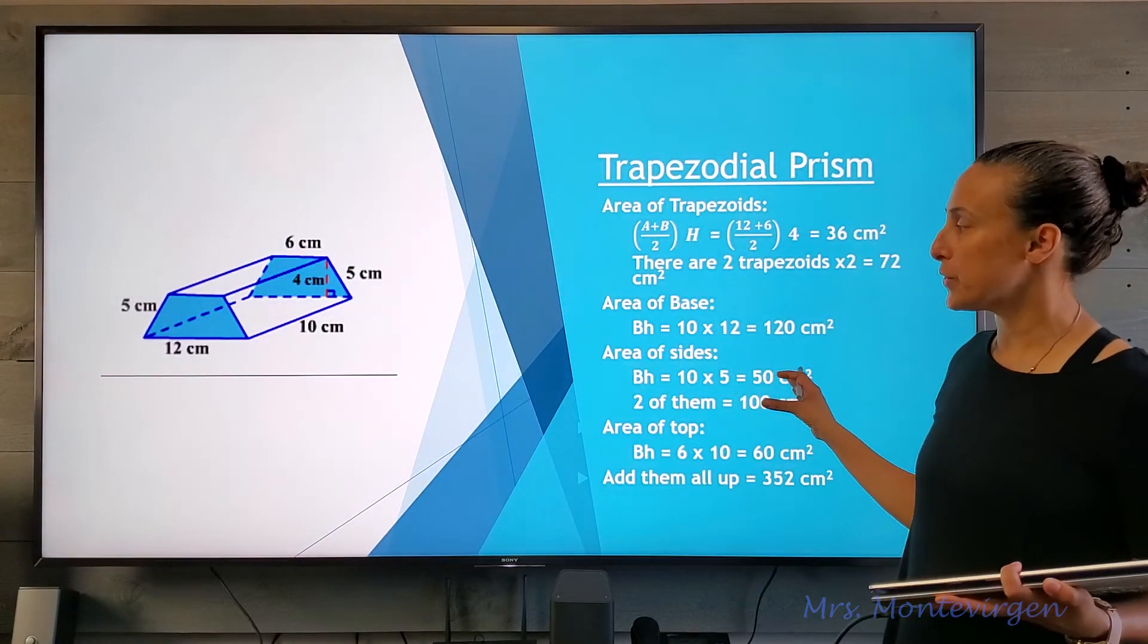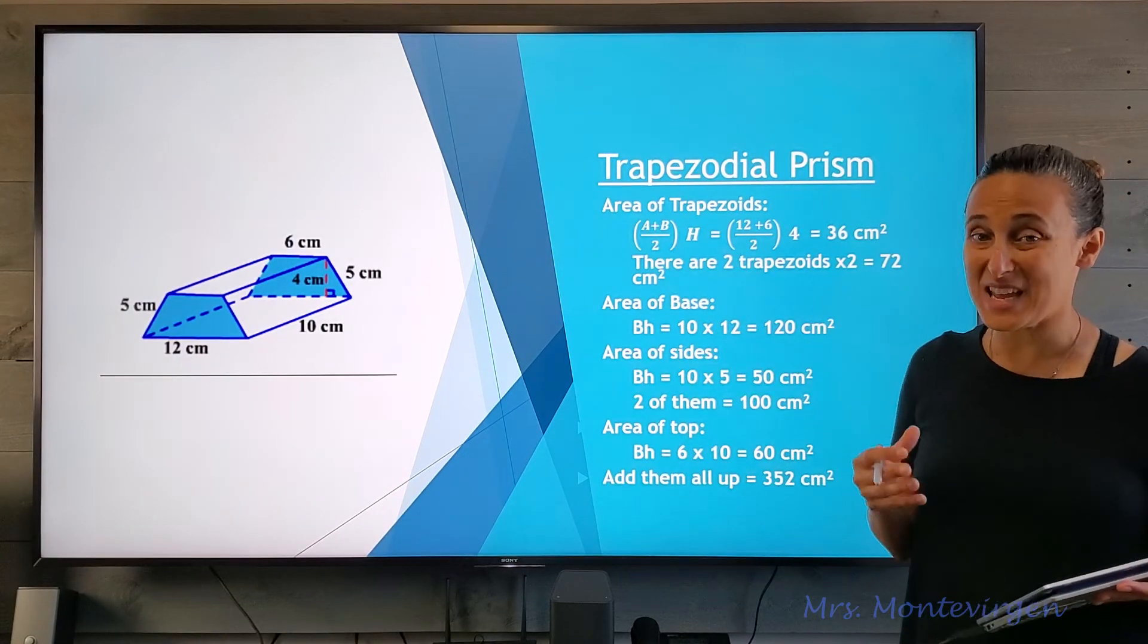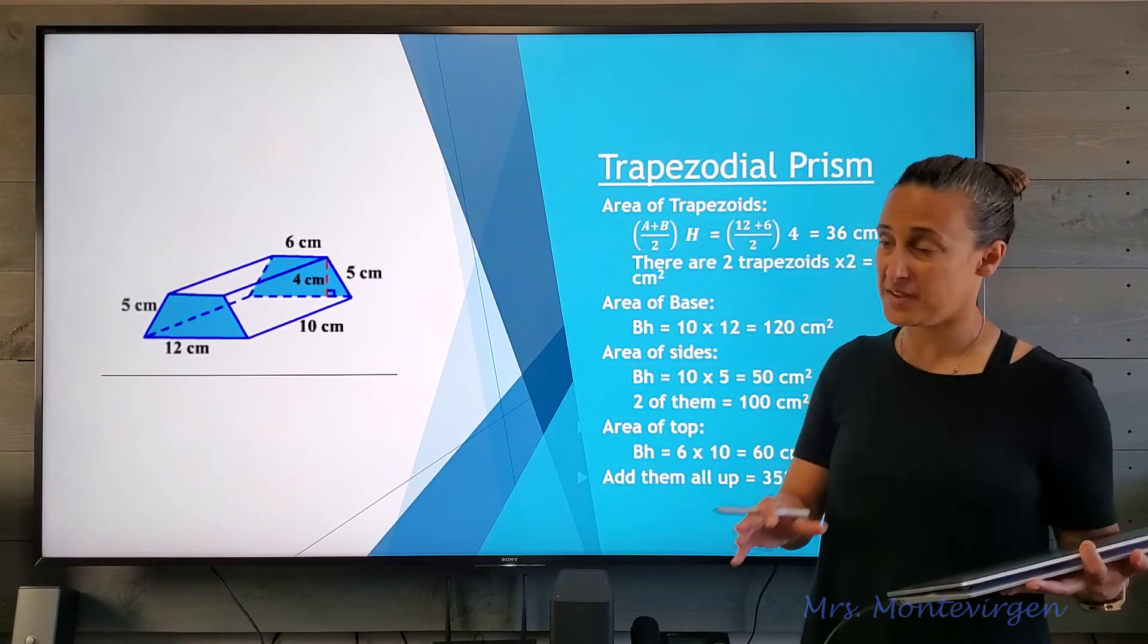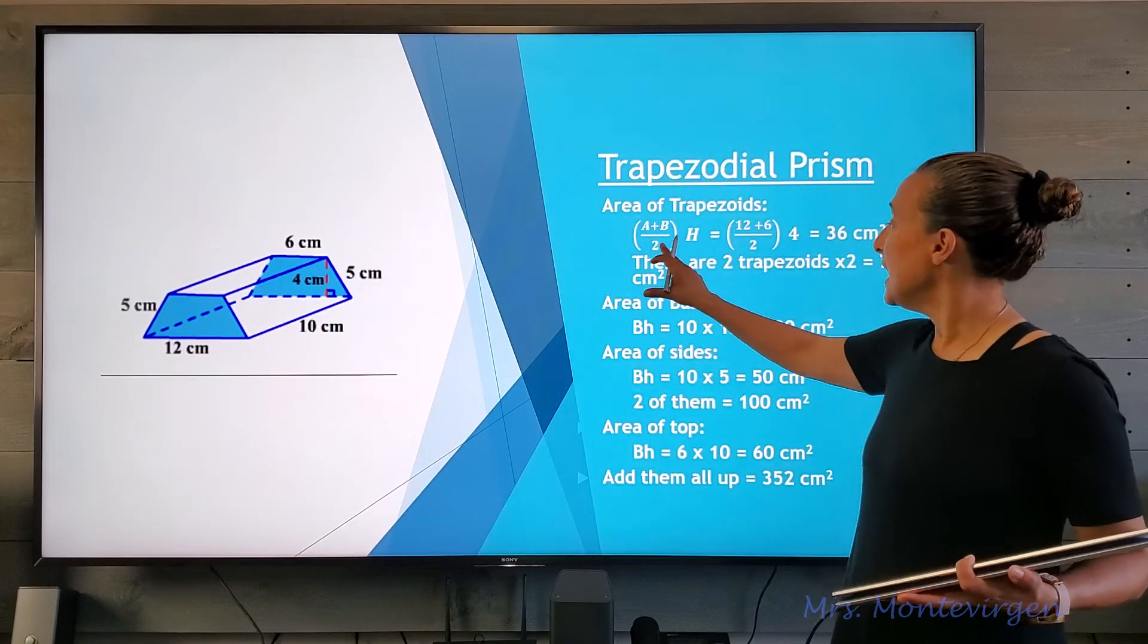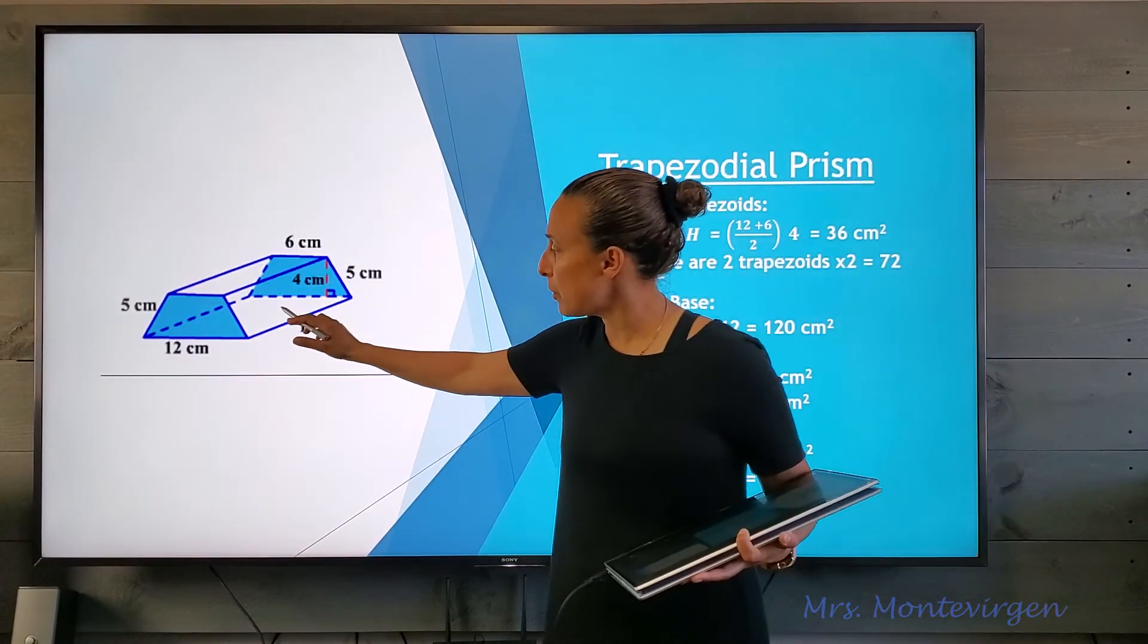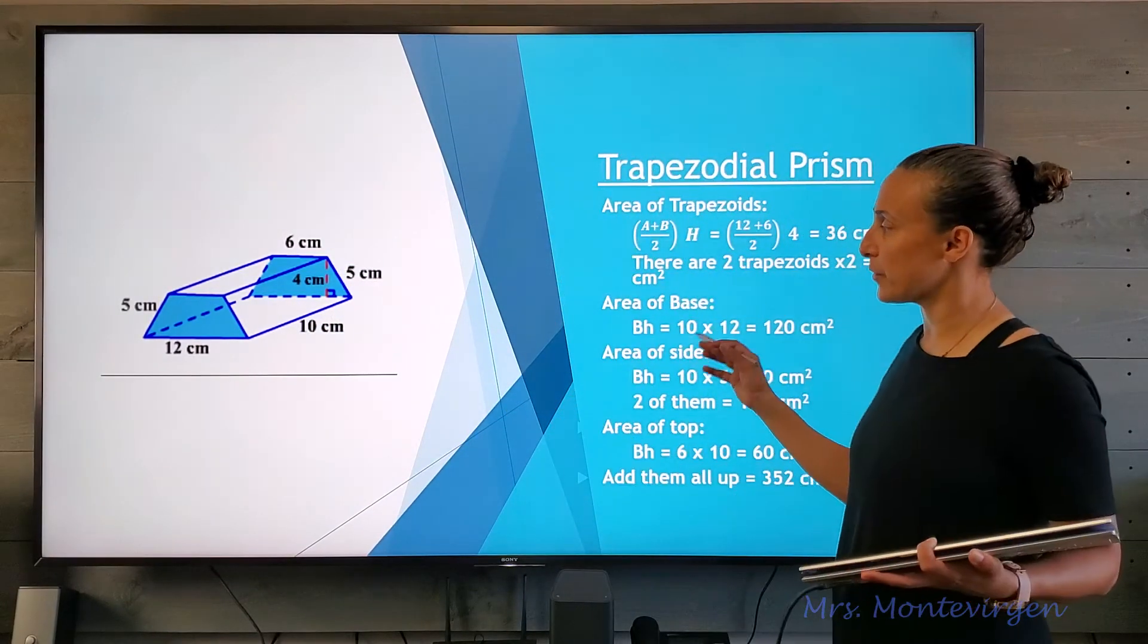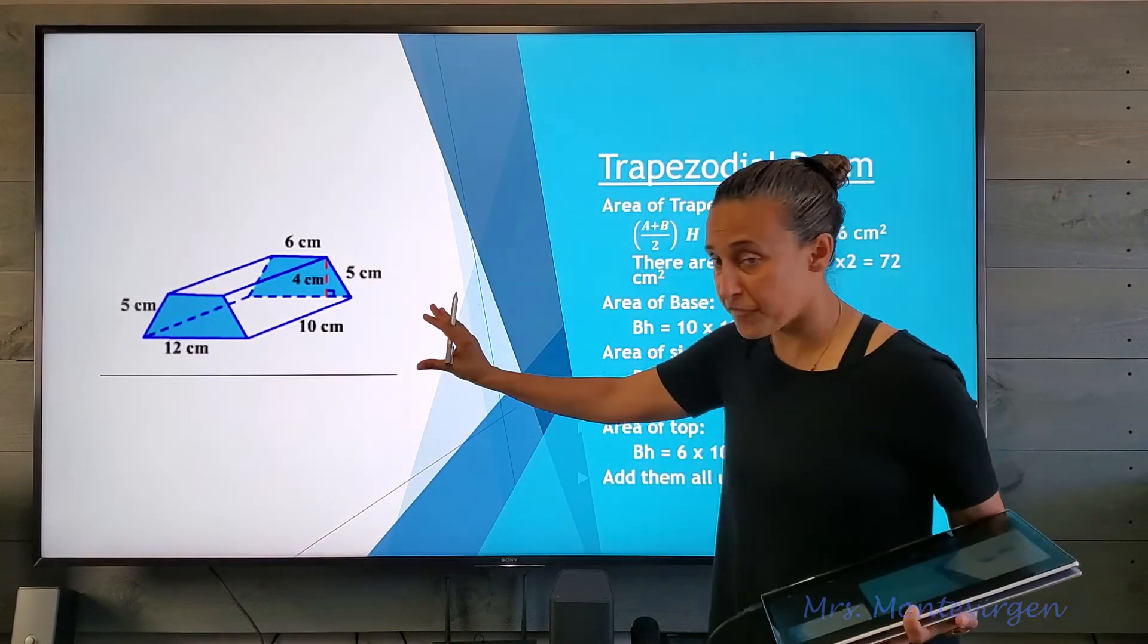I'm going to skip over this one and show you this trapezoidal prism. No matter what prism you're given, all you have to remember is what is the formula for each of the faces. If you can remember that, you can figure the surface area for any prism. For the trapezoid, if you remember the formula A plus B divided by two multiplied by height, then you can combine that with rectangle formulas and find the surface area of this trapezoidal prism.